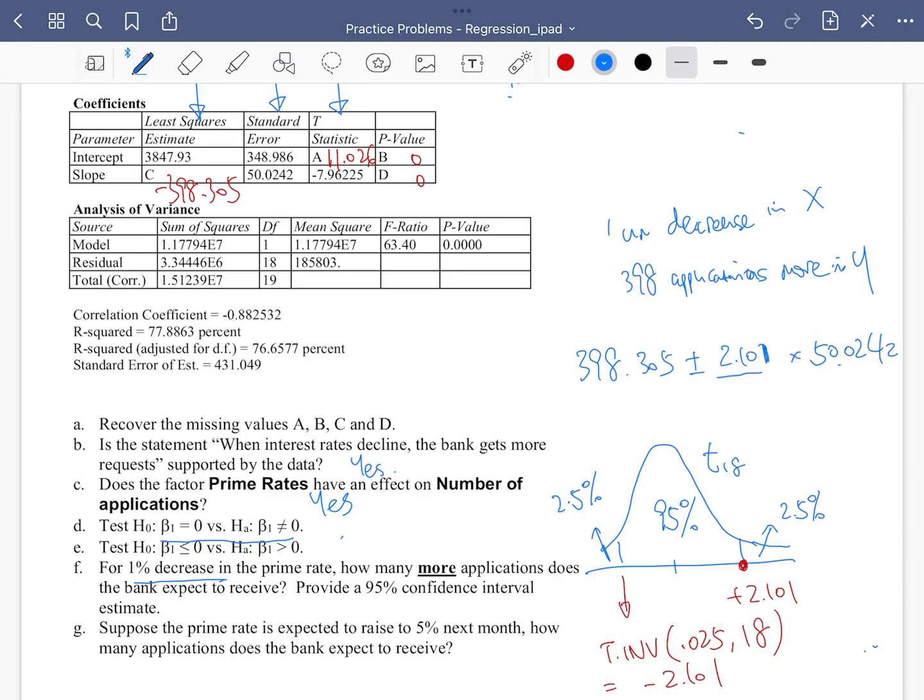So now we have computed our confidence interval and the answer should be close to 293 to 503 applications. So for every one-unit decrease in interest rate, we expect to see about 293 to 503 more applications.